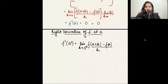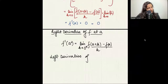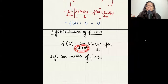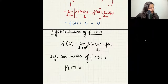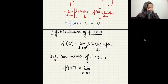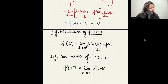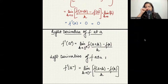Similarly, the left-hand derivative of function f at point a is the limit of [f(a+h) − f(a)] / h as h → 0⁻, meaning h approaches zero from the negative (left) side — for example, values like −0.0001. That is the definition of the left derivative.